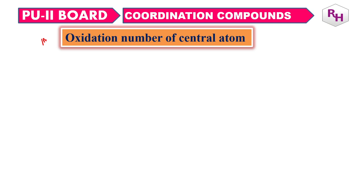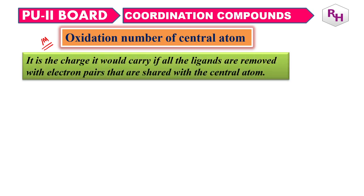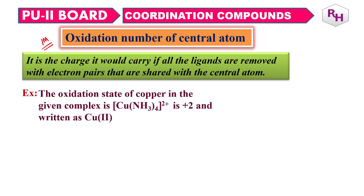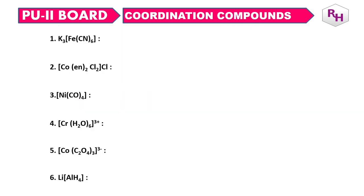Next, very important: oxidation state of the central atom. The oxidation state is the charge present on the central element — the charge it would carry if all the ligands are removed along with the electron pairs shared with the central atom. For example, in Cu(NH3)4 2+, the 2+ is written as Cu2+, so the copper oxidation state is 2+. To calculate, you need to know the charges on the ligands.